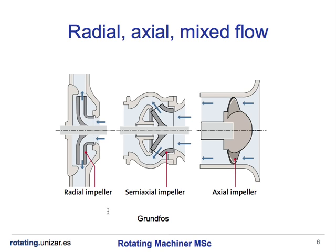If we look at the type of flow inside the impeller, we can classify impellers in three types: radial, axial, and mixed flow. In the radial impeller, you can see the actual direction of the flow compared to the radial direction. This impeller has a velocity with mostly or exclusively a radial component. In this other impeller, you can see the flow has mainly an axial direction.